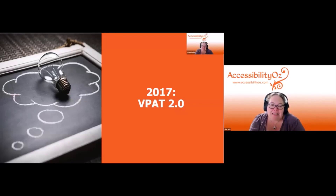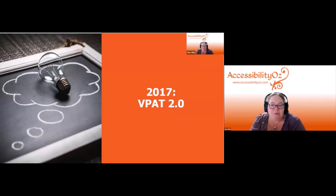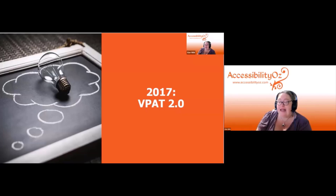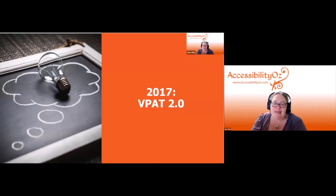In 2017, VPAT 2 was released, developed in partnership with the US Government, the General Services Administration, and the Information Technology Industry Council. It incorporated WCAG 2 and EN 301-549, included multiple standards with separate versions for each, and importantly included evaluation methods — you had to state not just that you meet a requirement, but how you determined that. That was a significant change.